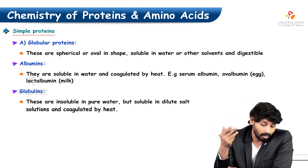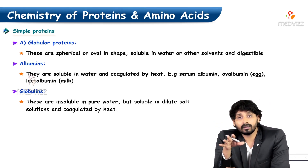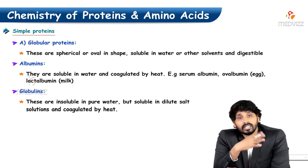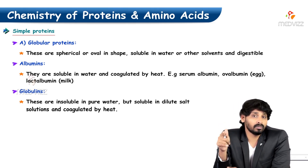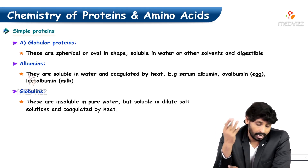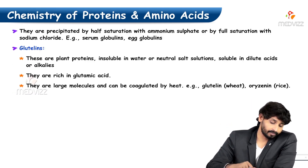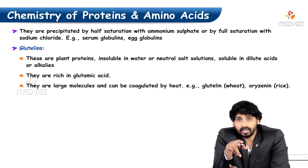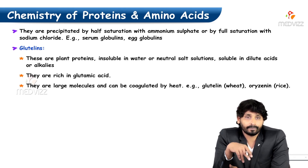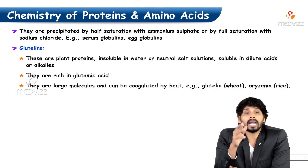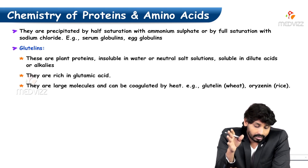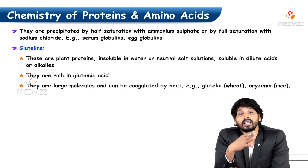Albumins are soluble in water and coagulated by heat. Examples: serum albumin, o-albumin present in eggs, and lactalbumin in milk. Globulins are insoluble in pure water but soluble in dilute salt solutions and can be coagulated by heat. They are also precipitated by half saturation with ammonium sulfate and full saturation with sodium chloride. Glutelins are plant proteins, insoluble in water and neutral salt solutions but soluble in dilute acids, rich in glutamic acid, and form longer molecules that can be coagulated by heat. Examples: glutalin of wheat and ricin in rice.